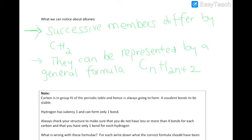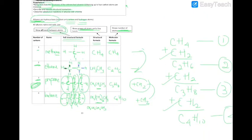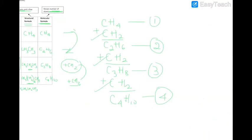And the second thing we notice is that it can be represented by a general formula. Let's see what that means. So we have CH4, so here, number of carbon is 1. So CnH2n plus 2. That's the general formula for alkane.